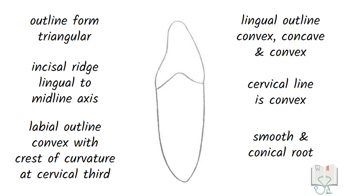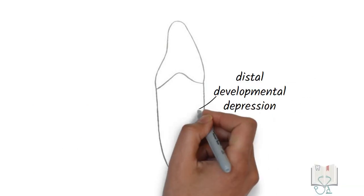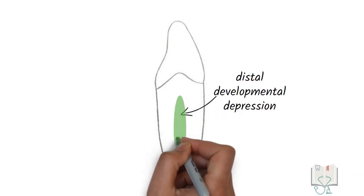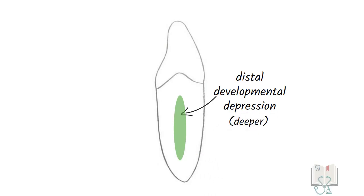All the features from the mesial aspect are the same in the distal aspect as well. Though, the distal developmental depression on the root is deeper than the mesial developmental depression.